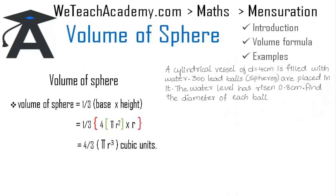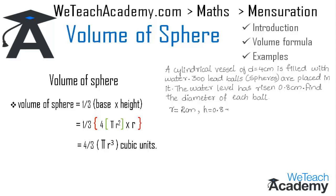The second example: a cylindrical vessel of diameter 4 centimeters is filled with water and 300 lead balls are placed in it. The water level rises by 0.8 centimeters. Find the diameter of each ball. The radius of the vessel is 2 centimeters and the height risen is 0.8 = 4/5 centimeters. Volume of the cylinder = πr²h = 22/7 × 4 × 4/5, giving 352/35 cubic centimeters.